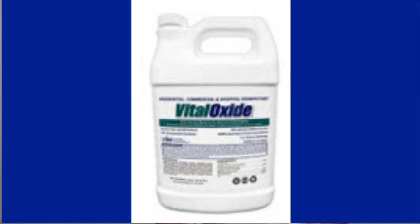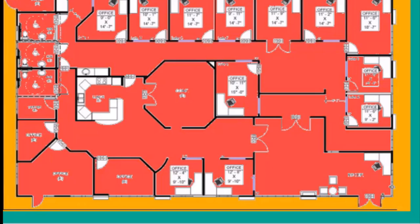Now let's look at the route to use when applying disinfectant. We start at the clean zone (green), come into the yellow transition zone, then into the operating zone (red). We follow the same route we took during routine cleaning. Whatever method you're using — electrostatic sprayer, fogger, mister, or pump-up sprayer — you follow the same route. We start at the doorway and make sure we cover all touch points and surfaces in the area.